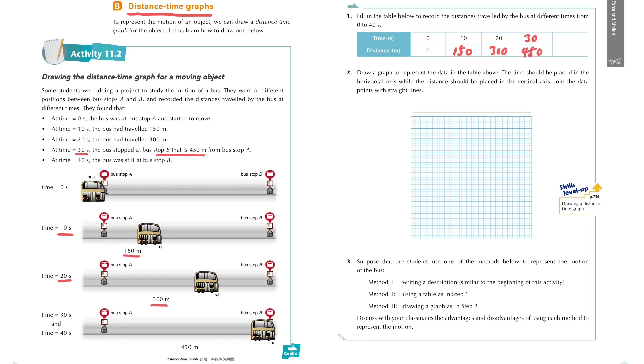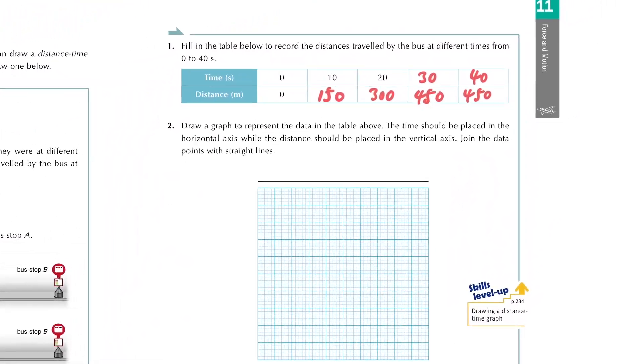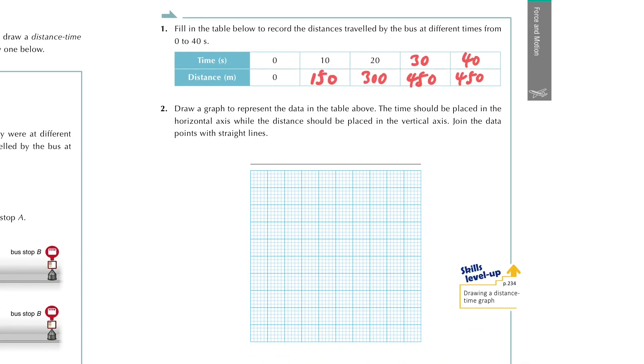And at time equals 40 seconds, the bus is still stopped there. So the total distance traveled is still 450 meters because the bus doesn't move at all after 30 seconds. So now we have the table to show the relationship between time and distance.